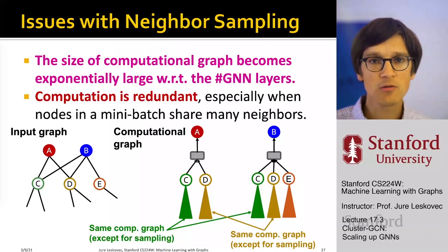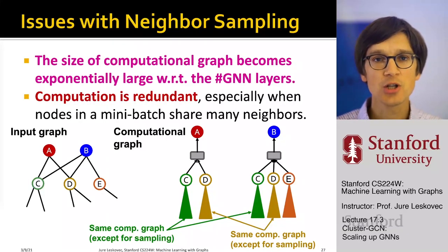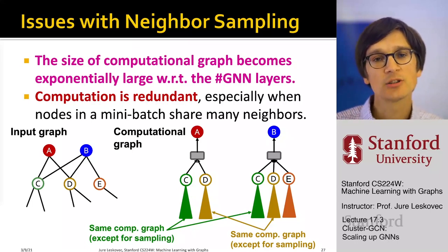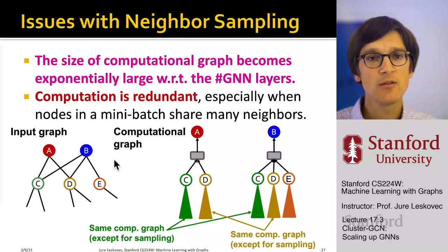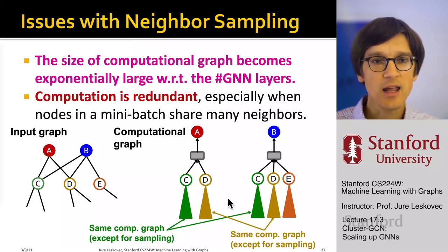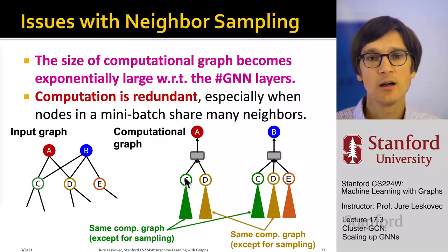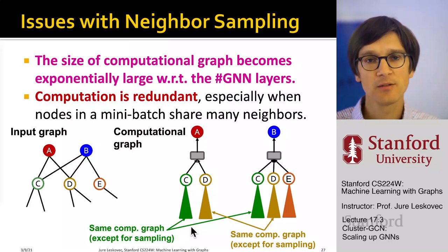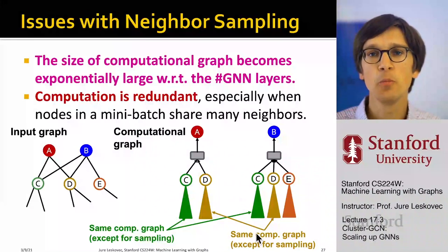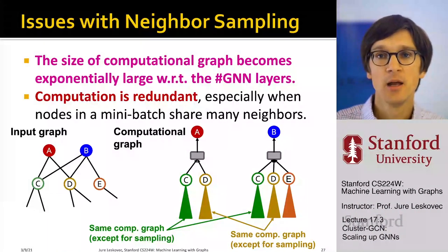We can also observe that computation in these computational graphs can be very much redundant because of shared neighbors. For example, if you think of two nodes A and B and their computation graphs, because they share a lot of friends in common, these computation graphs are heavily redundant. Both to compute A and compute B, the parts of the computation graphs below nodes C and D are identical — so this will be duplicated computation.